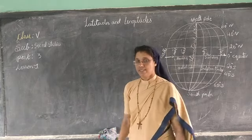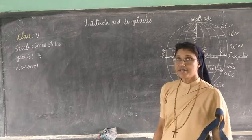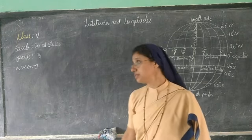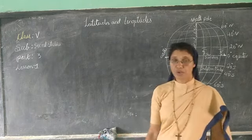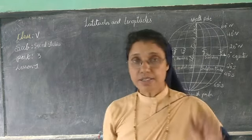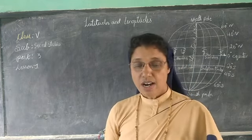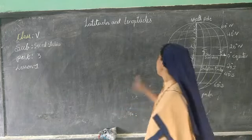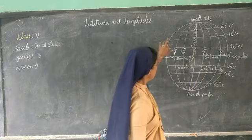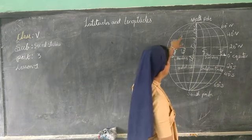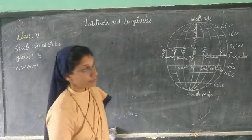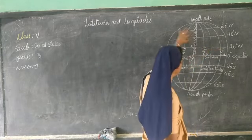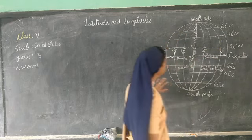Hello children. In the other classes we learnt about the latitude and longitude and what are the importance of latitude and longitude. In this class we learn how we are locating the places and calculating time with these latitudes and longitudes. The horizontal lines are known as latitudes and the vertical lines are known as longitudes.